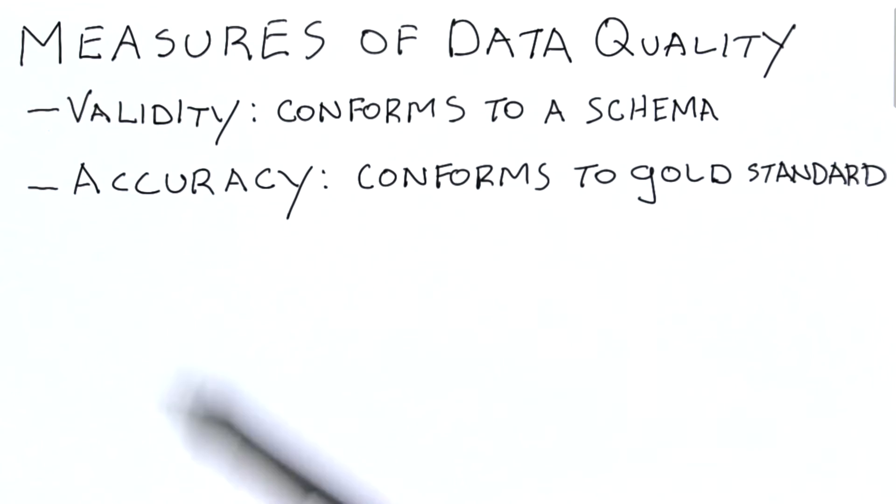We can also look at accuracy. This is the degree to which entries conform to gold standard data. What I mean by that is probably best expressed with an example. So, do all street addresses in a data set that we're cleaning actually exist? In order to test that type of accuracy question, we would need some gold standard, that is, some set of data that we actually trust.